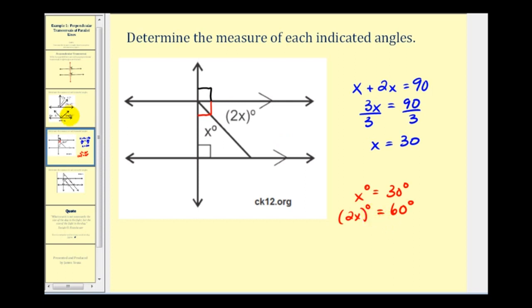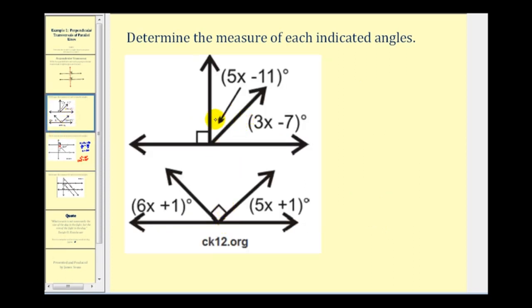Let's take a look at another example. Here we have two figures, and again we want to determine the measure of the missing angles. Looking at this first figure, this ray here is perpendicular to the line, and therefore we have a right angle on the left and on the right, which means both of these angles have a measure of ninety degrees. So the sum of these two angles would be complementary. Five x minus eleven plus three x minus seven has to be equal to ninety.